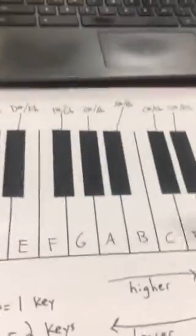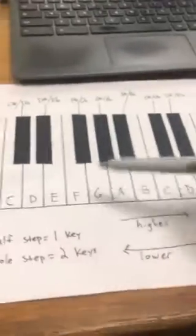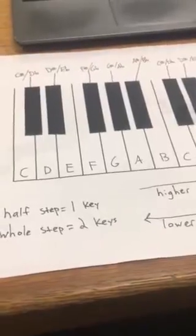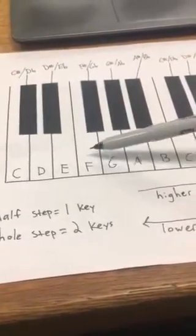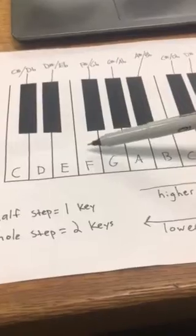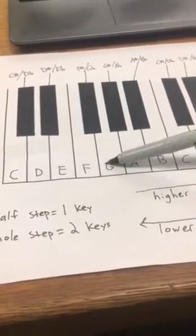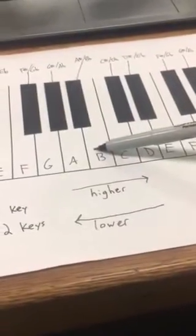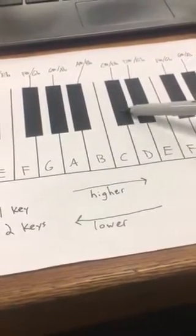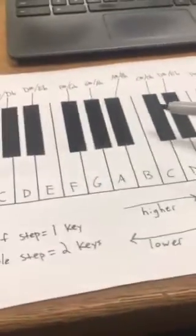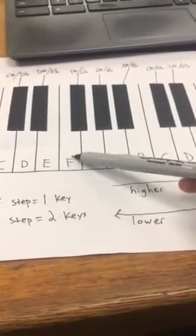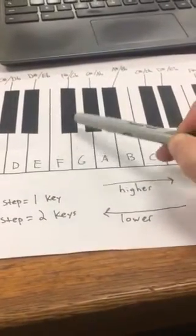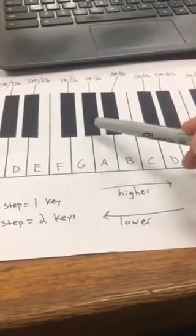It could also ask you to go a whole step lower. A whole step is two keys. It's where you count two instead of one. So if we were on the note F and we wanted to go a whole step higher, we'd count one, two. If we were on B and we wanted to go a whole step higher, we'd count one, two. We would not want to do this. We're starting on F. If you go one, two, you are wrong because you are skipping these black keys.